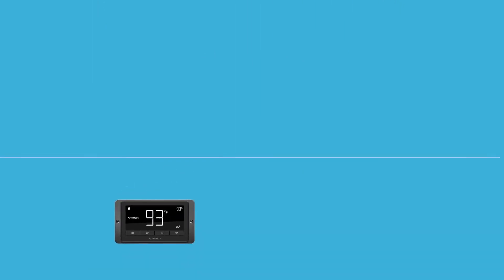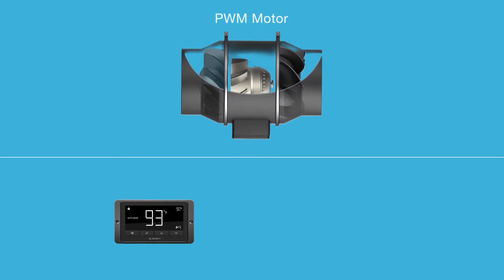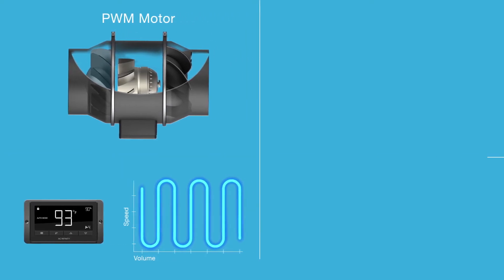Containing an EC motor that is controlled by PWM, our fans use modulation pulses to optimize the motor performance at every speed, resulting in up to 40% increased efficiency.